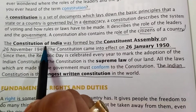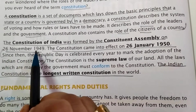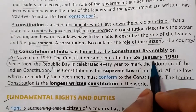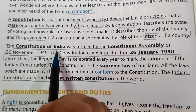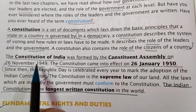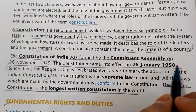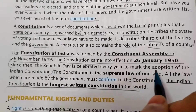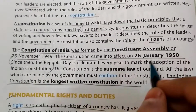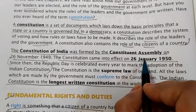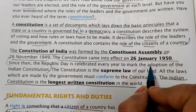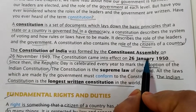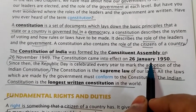The Constitution of India was formed by the Constituent Assembly on 26 November 1949. It came into effect on 26 January 1950. Since then, Republic Day is celebrated every year to mark the adoption of the Indian constitution, as this is the day our constitution came into force.